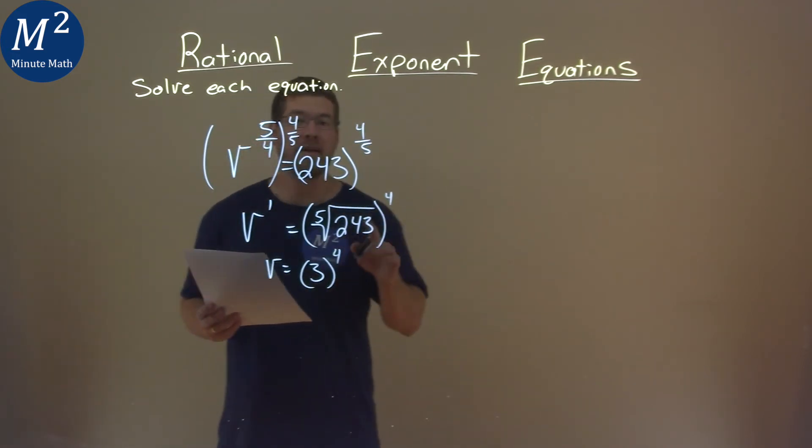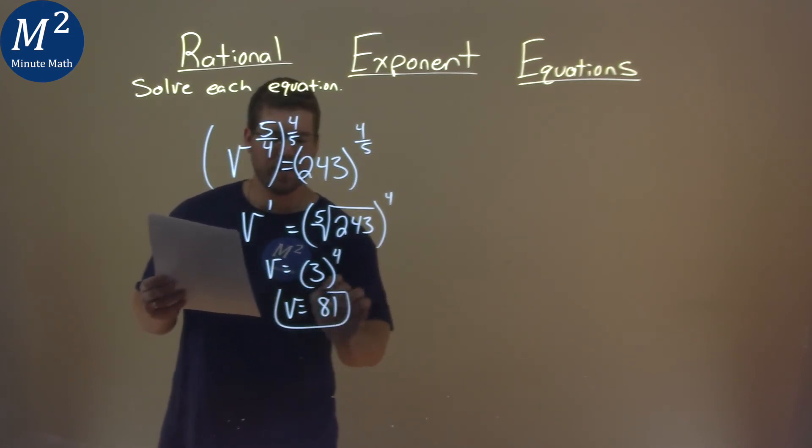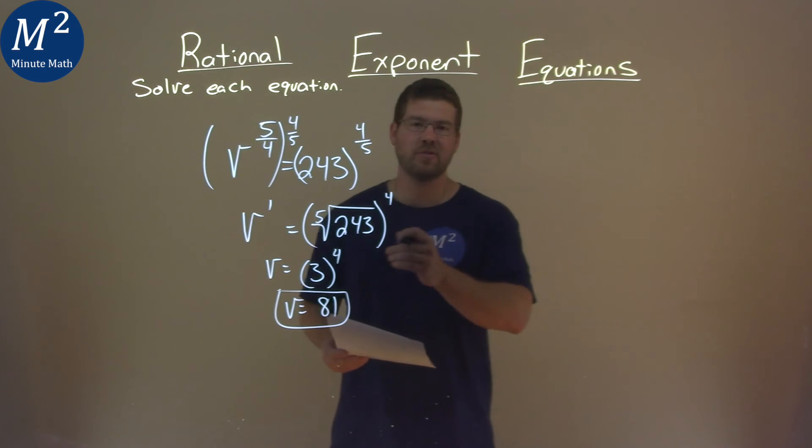Then we have to raise that to the 4th power, and we have now 3 to the 4th power here. What's 3 to the 4th power? That is 81. And so, my final answer here is just 81.